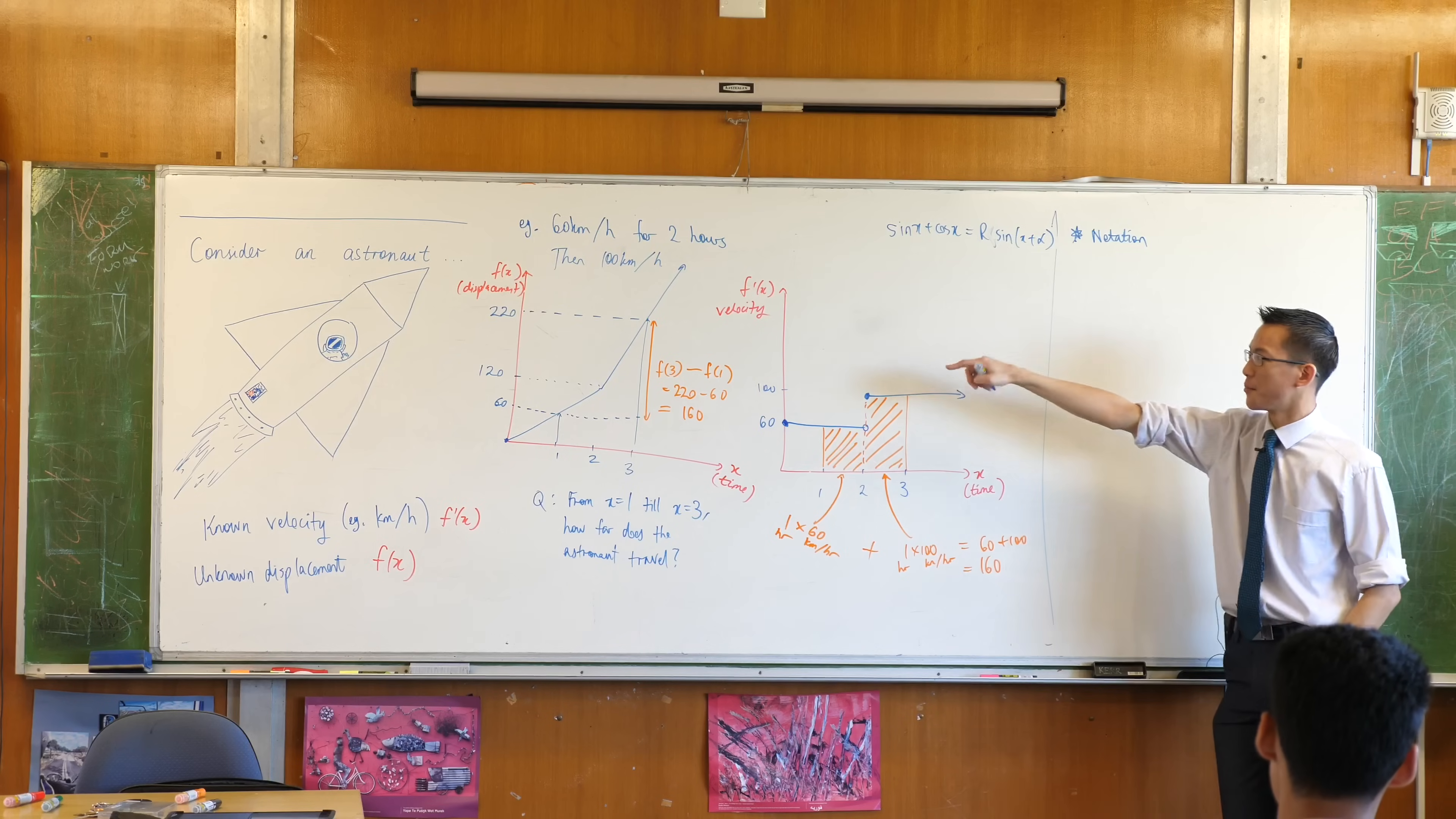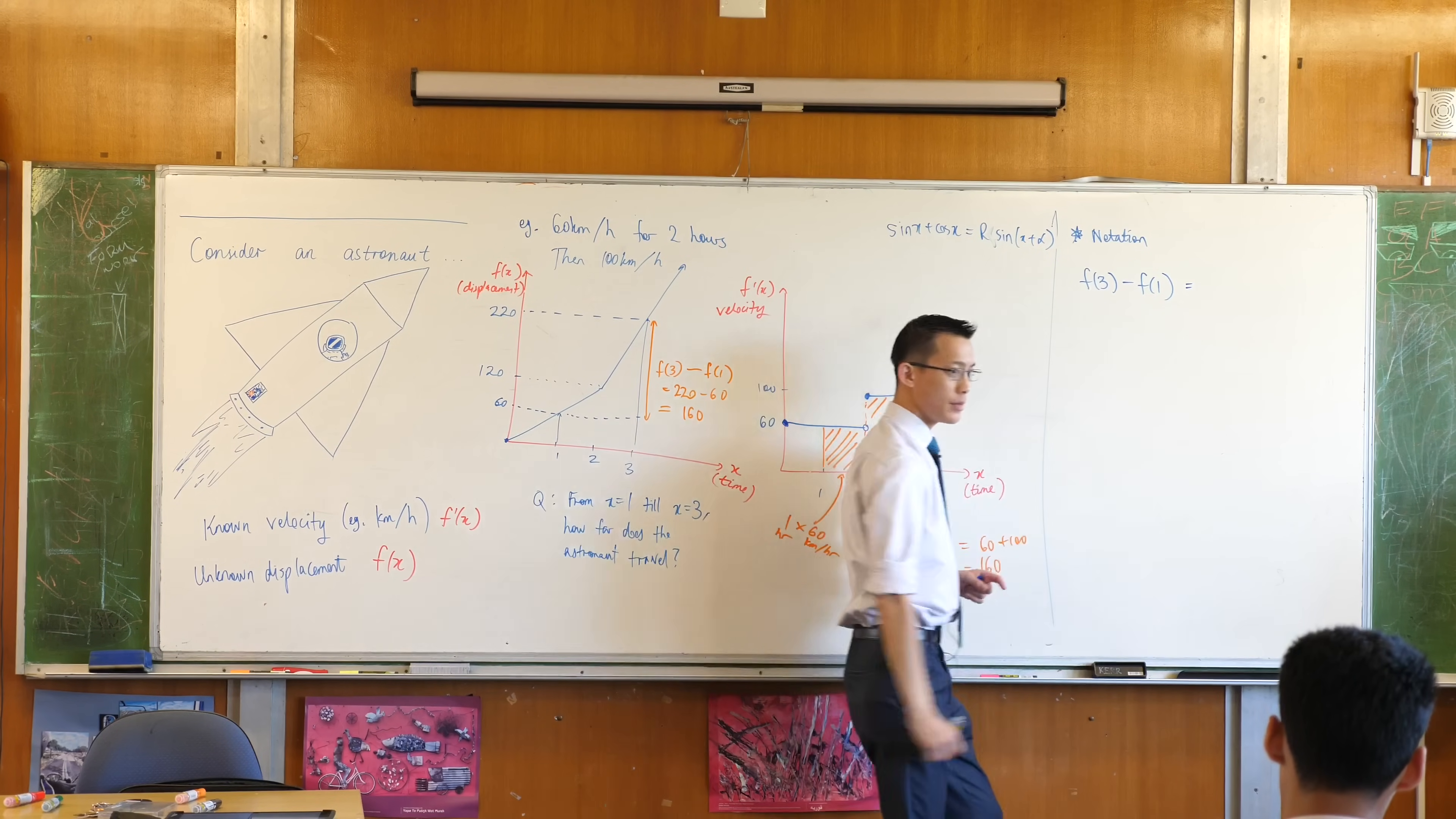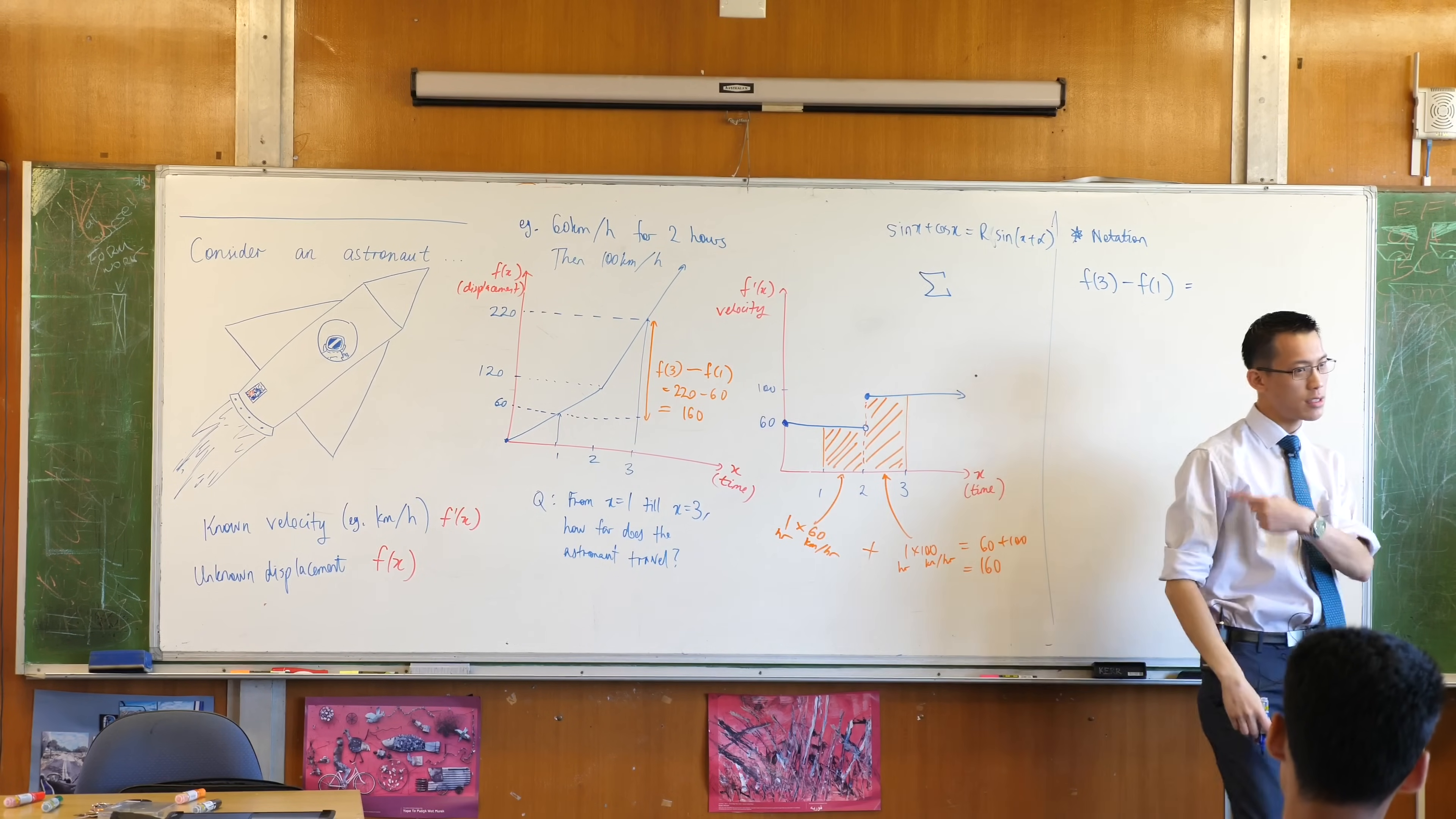So, let's write down some notation here. f of 3, take away f of 1. That's the problem we solved over here. Total distance travelled is end point, take away start point. But what it's equal to is adding up these areas. They happen to be rectangles in this case. Now, because I'm summing things up from one point to another, I don't really have notation for that. I kind of have this notation. What's this called again?